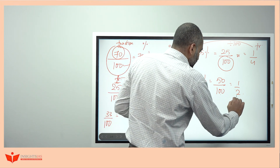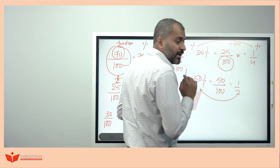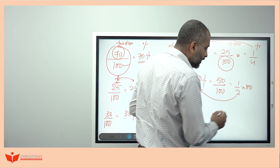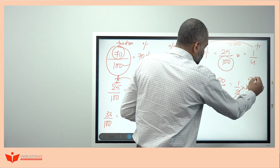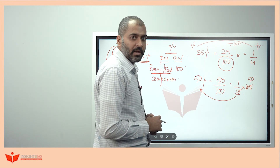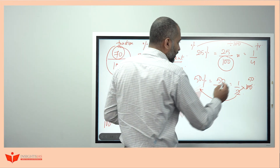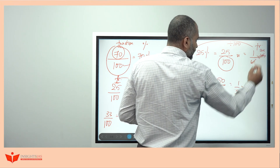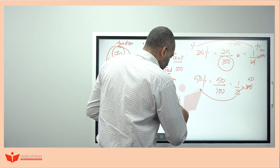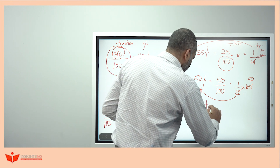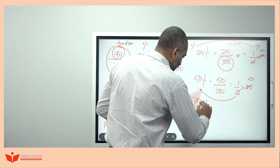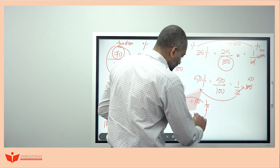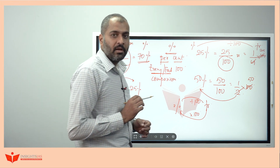To convert back from fraction to percentage, multiply by 100. For example, 1 by 2 multiplied by 100 gives 50%, and 1 by 4 multiplied by 100 gives 25%. So percentage is converted to fraction by dividing by 100, and fraction is converted back to percentage by multiplying by 100.